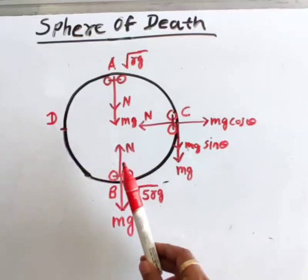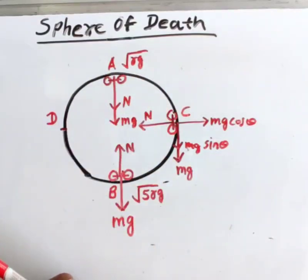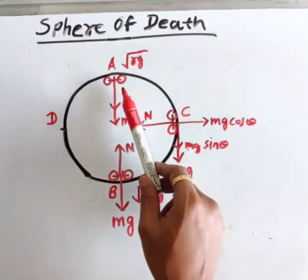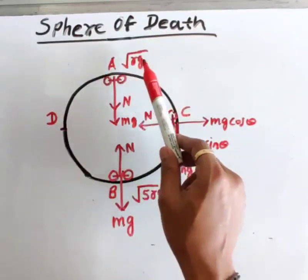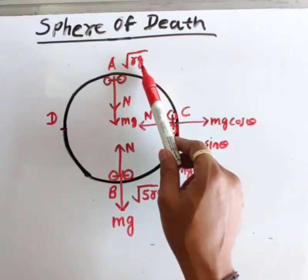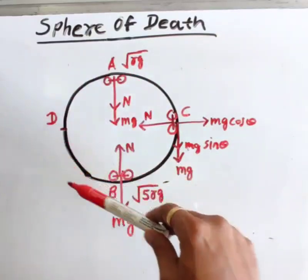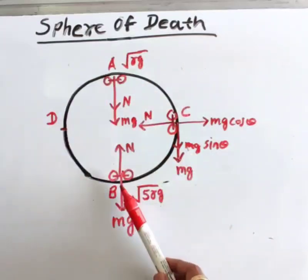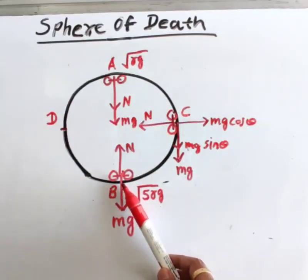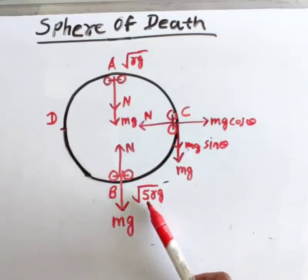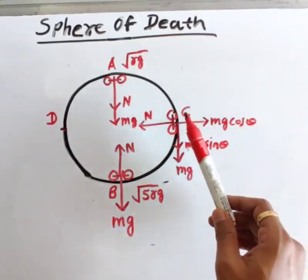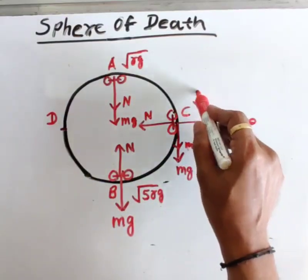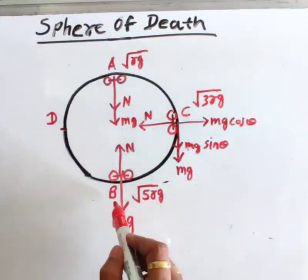In order to complete the vertical circular motion in the Sphere of Death, the motorcyclist must not lose contact with the sphere. For this, the minimum speed at the topmost position must be √(rg). At the lowest position, that is point B, the minimum velocity must be √(5rg), and at the mid position the speed must be √(3rg).